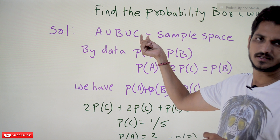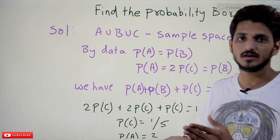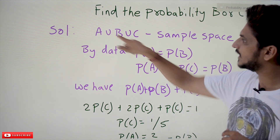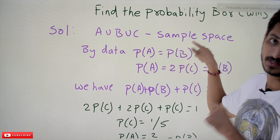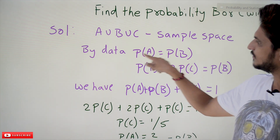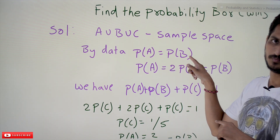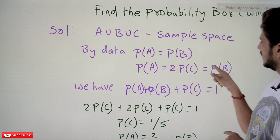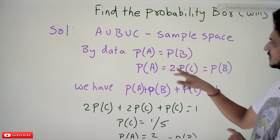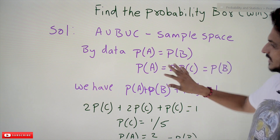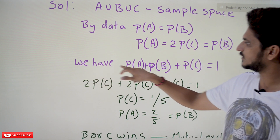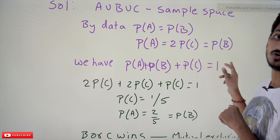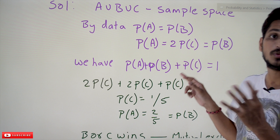Coming to the solution: A or B or C — anyone is going to win — this is our sample space. From the data: probability of A equals probability of B, and probability of A equals two times probability of C, and probability of B equals two times probability of C. This is already given in the question.